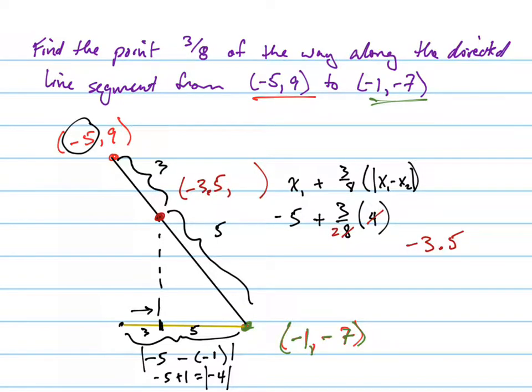Now to find the y coordinate, we're going to do a similar thing, but we're going to take the horizontal line that goes from there to there, and we're thinking to ourselves, I want to go 3 out of 5, I want to go 3/8 of the way down that line. So we're going to take the distance, the total distance of that gray line. The total distance of that gray line is going to be found by taking the absolute value of the y's. We're subtracting the y's from each other. So the y coordinates are 9 minus -7, which is 16.